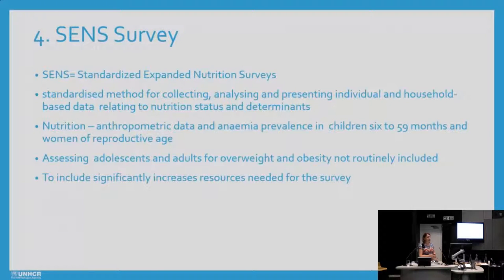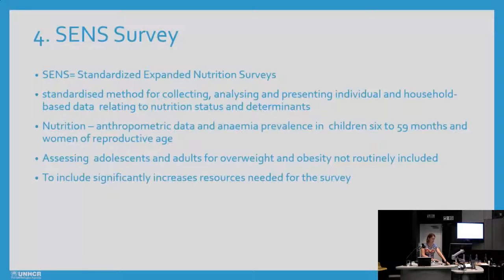The fourth tool is the SENS — the Standardized Expanded Nutrition Survey. This is mainly based on acute malnutrition, but we also collect anaemia prevalence. We only collect anthropometric data in children 6 to 59 months and women of reproductive age, using MUAC. We've only looked at overweight and obesity in one setting, and currently we don't have indicators as to when we would examine this, but it's probably something we should start.